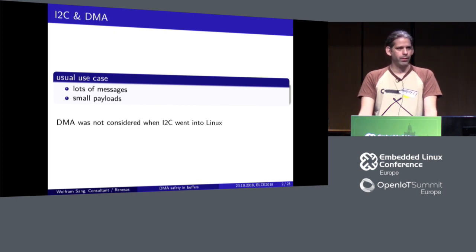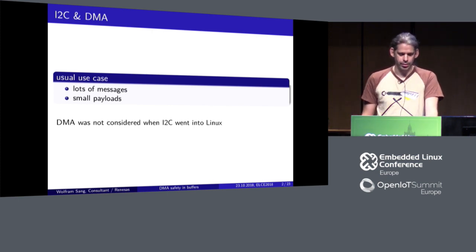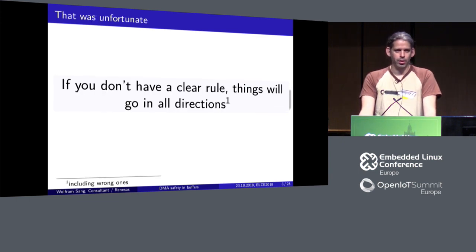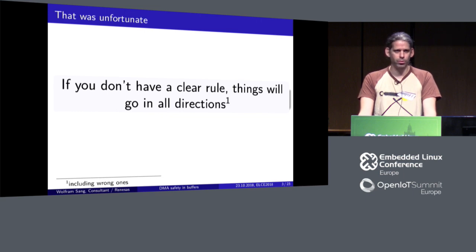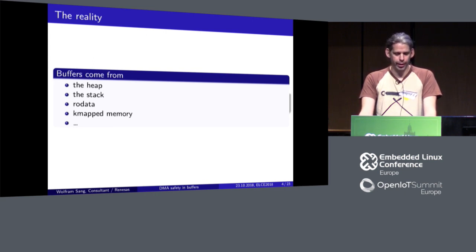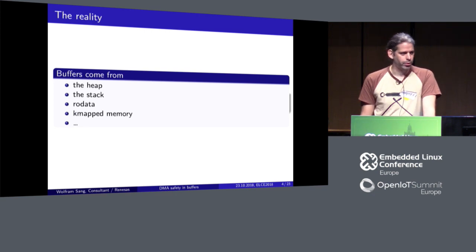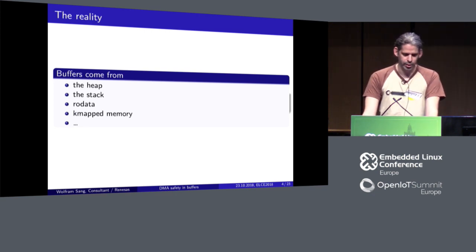Inside the struct I2C message, we have a pointer to a buffer where the actual data is. You all know Murphy's Law: if you don't have clear rules and give a chance for things to go wrong, things will go wrong in all possible ways. When I noticed issues with sending buffers via DMA and found out where the buffers come from, they really come from everywhere — heap, stack, read-only data, kmap memory, and whatnot. If there are no rules, people get creative and do all this kind of stuff.